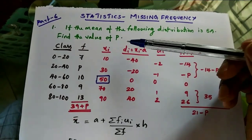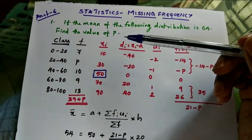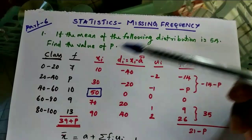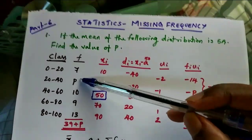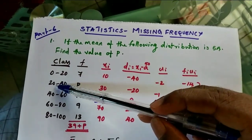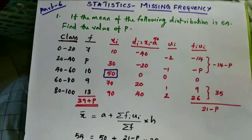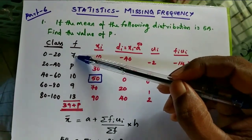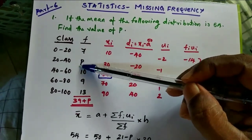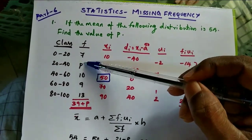Dear students, last day we discussed how to find mean in discontinuous data. Today we are going to discuss missing frequency. In the frequency table there is a missing one. The classes are 0-20, 20-40, 40-60, 60-80, 80-100 with frequencies 7, p, 10, 9, 13. We have to find the value of p.